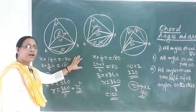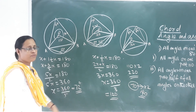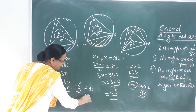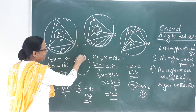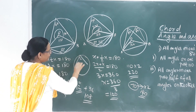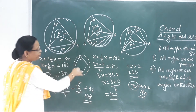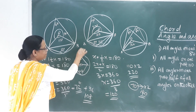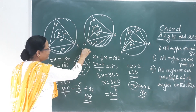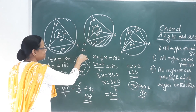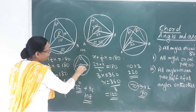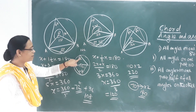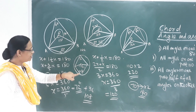So one part has an inscribed angle of 72 degrees and the other has 1.5 times 72, which is 108 degrees. The central angle for the 72-degree inscribed angle is 144 degrees, and for 108 degrees it is 216 degrees. Mark 144 degrees on the circle and draw the chord to create the two segments with angles 72 and 108 degrees.